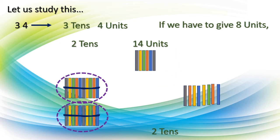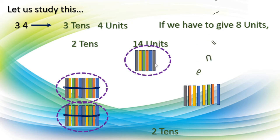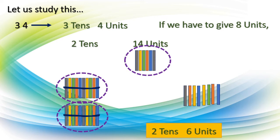Now what remained here? 2 tens remained. And how many units? Count: 1, 2, 3, 4, 5, 6 — 6 units remained. Altogether, 2 tens and 6 units remained when we take out 8 units — that is nothing but 3 tens and 4 units — from 34.